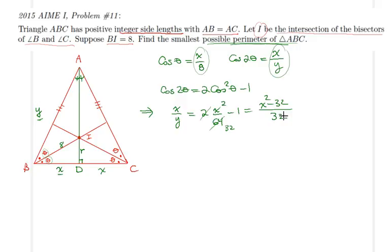You can do a cross product to establish this, so that would further imply that 32x is simply equal to y times x squared minus 32.